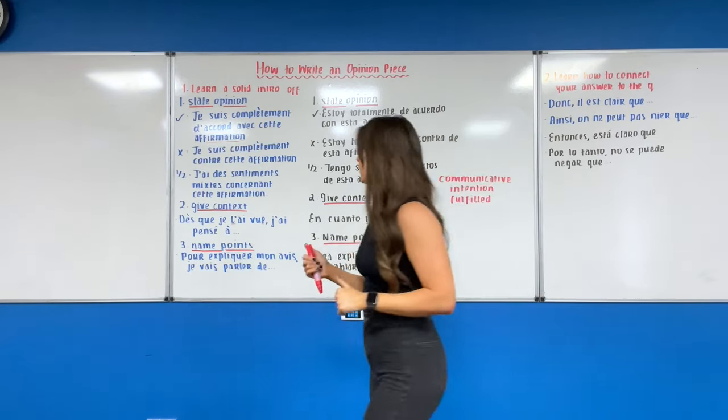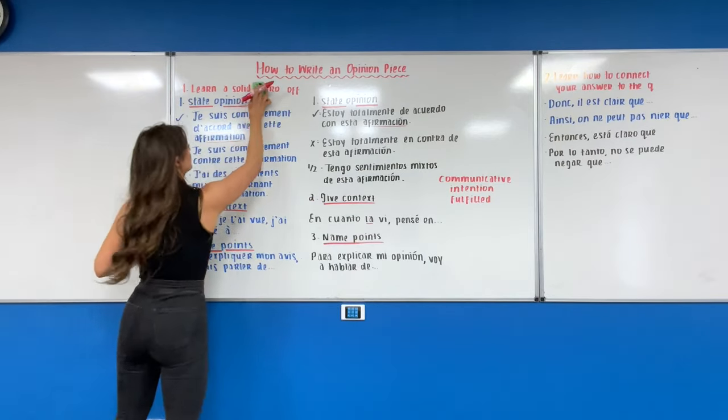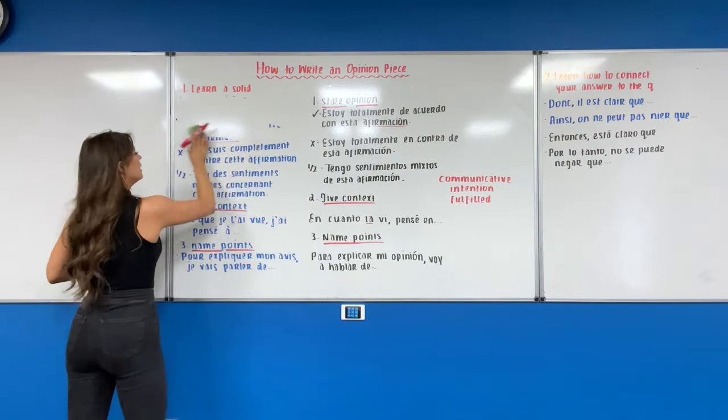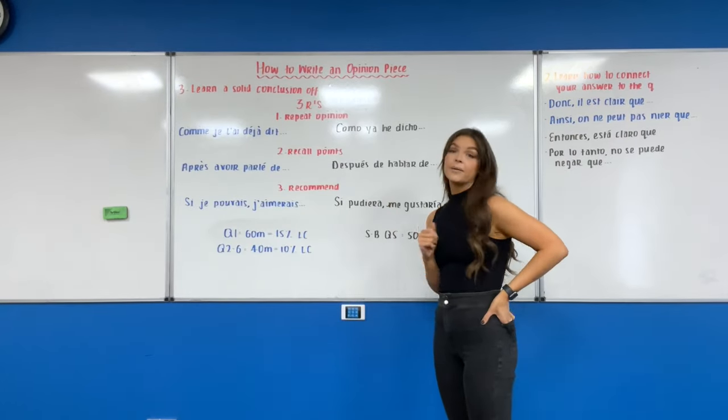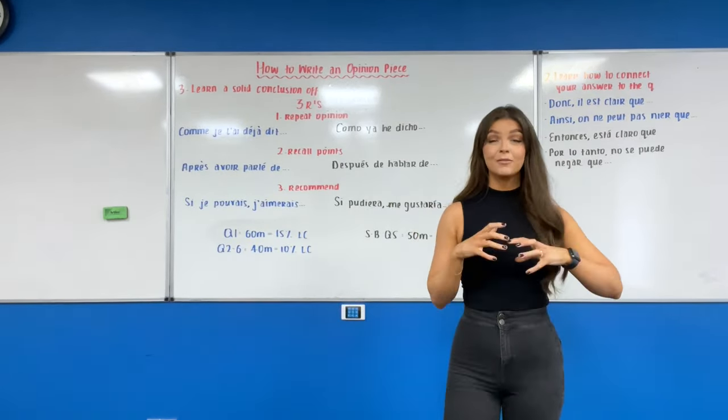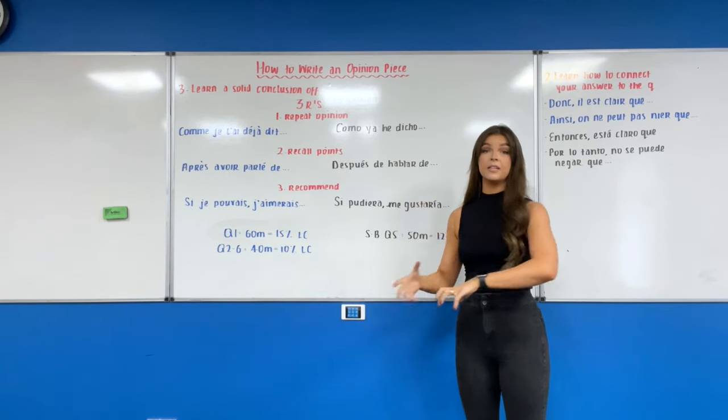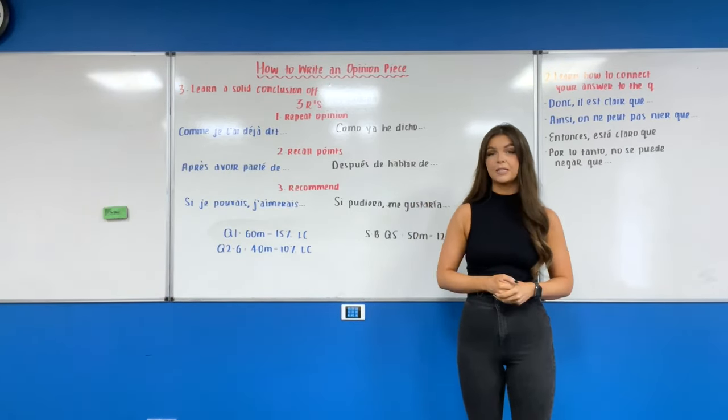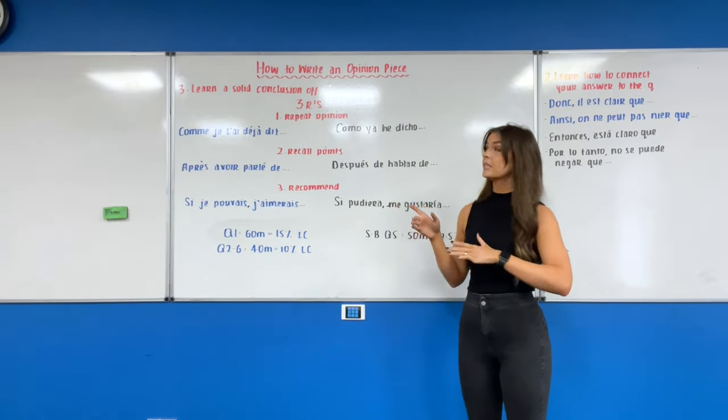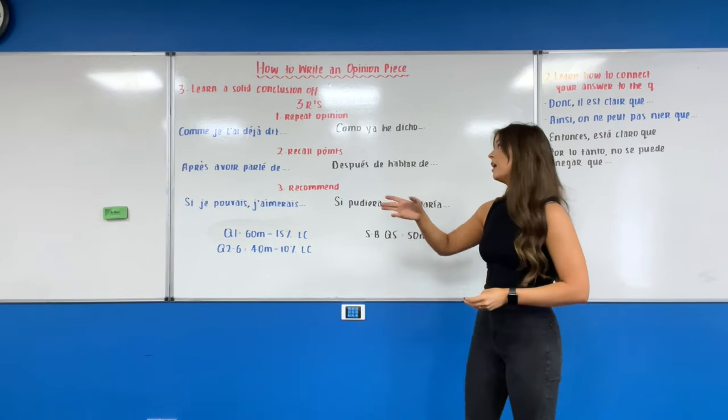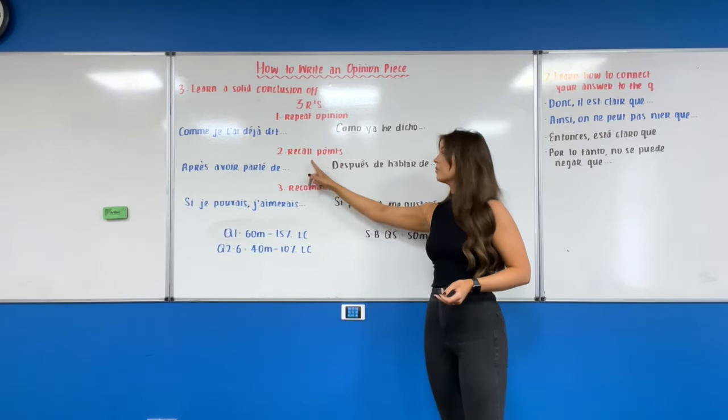So that's step number two. Now step number three, we have to figure out how we are going to tie our answer together. We're also going to have to learn a conclusion. Step number three then, to really kind of bank up these marks and make sure that you really fulfill that communicative intention that you laid out in step number one, which was writing your solid introduction, is to have a solid conclusion. For both of these languages I tend to follow this pattern of your three R's: repeating our opinion, recalling our points, and recommending something.